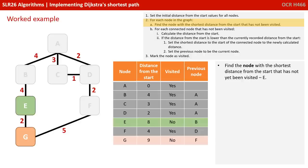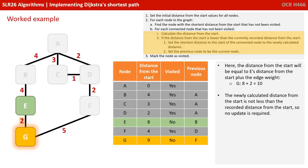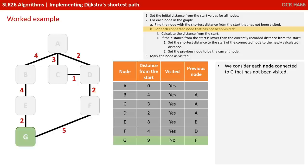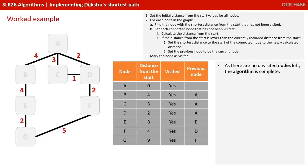We find the node with the shortest distance from the start not yet visited — that's E with a value of 8. We consider each node connected to E that has not been visited — just G. E's distance of 8 plus edge value 2 gives 10. Note that 10 is not less than the current value of 9 recorded for node G, so we don't update. We're finished with E, so we mark it as visited. Next is G — no connected unvisited nodes, so we mark it visited. As there are no unvisited nodes left, the algorithm is complete.